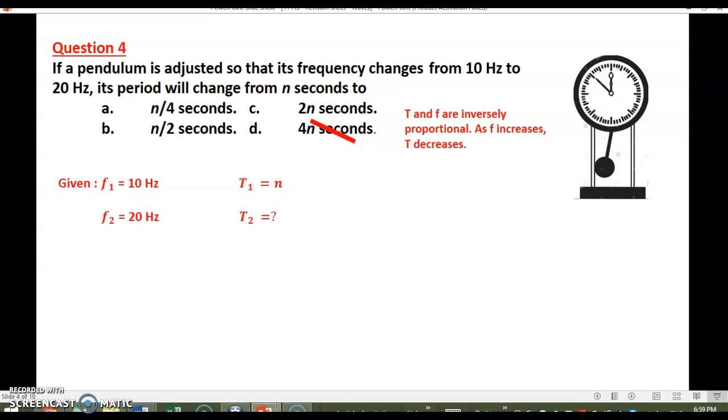We know from the formula T equals 1 over f and f equals 1 over T that they are inversely proportional. This means that as f increases, T decreases.